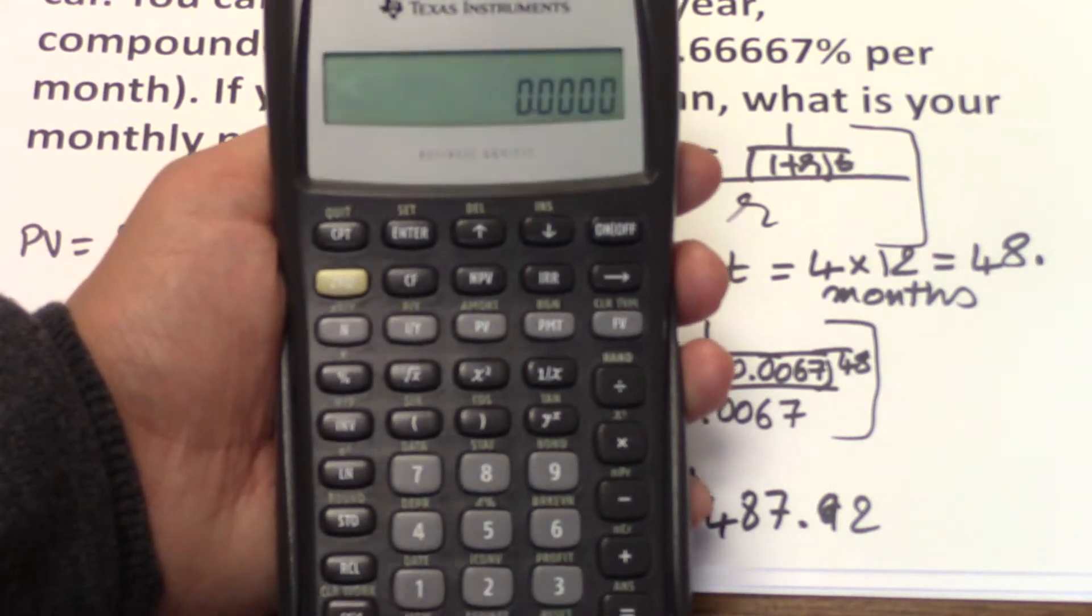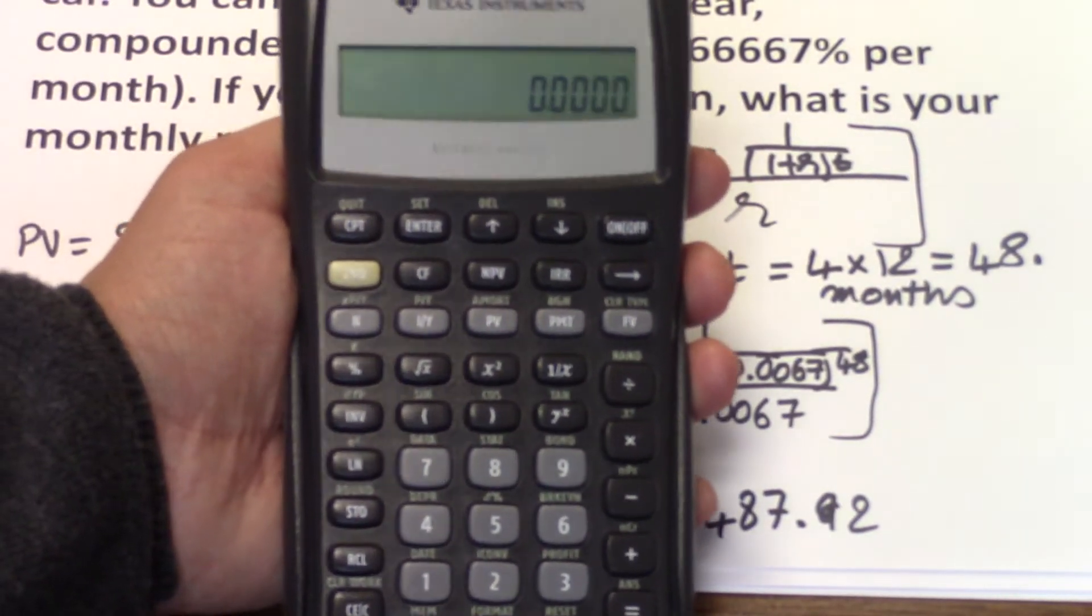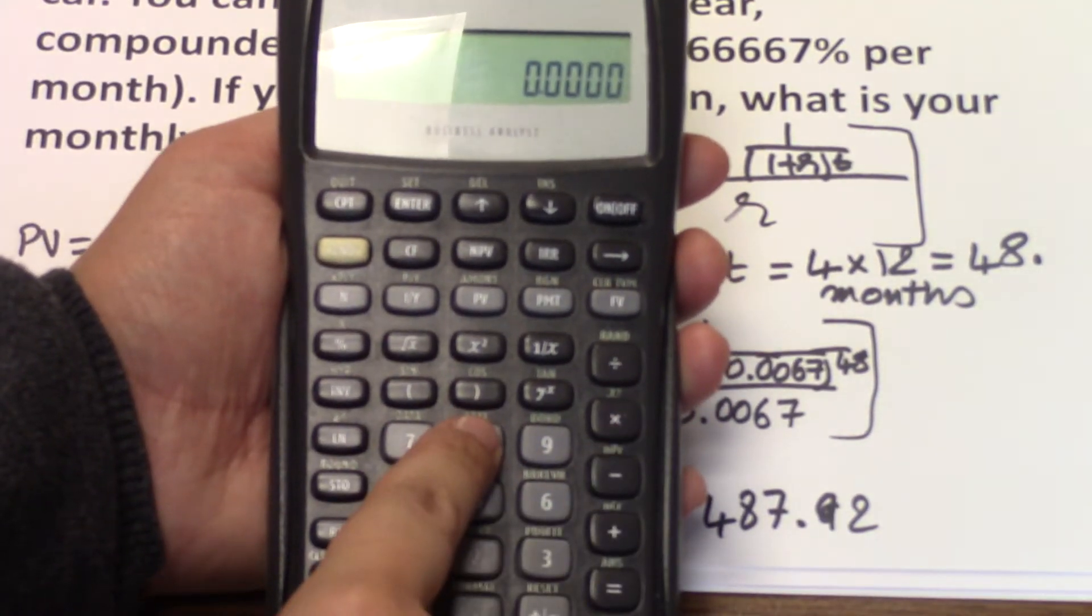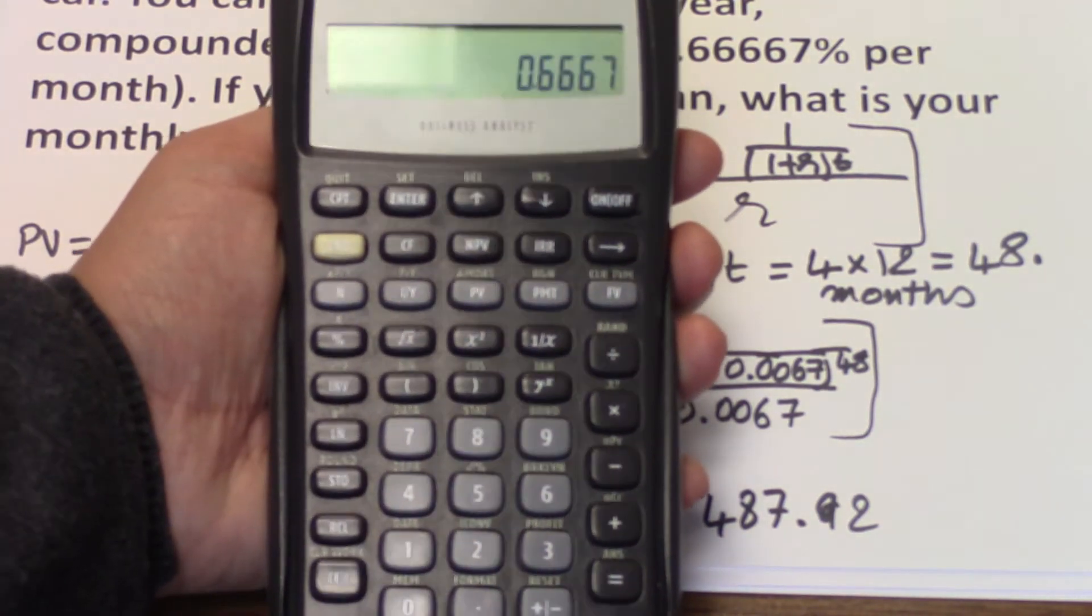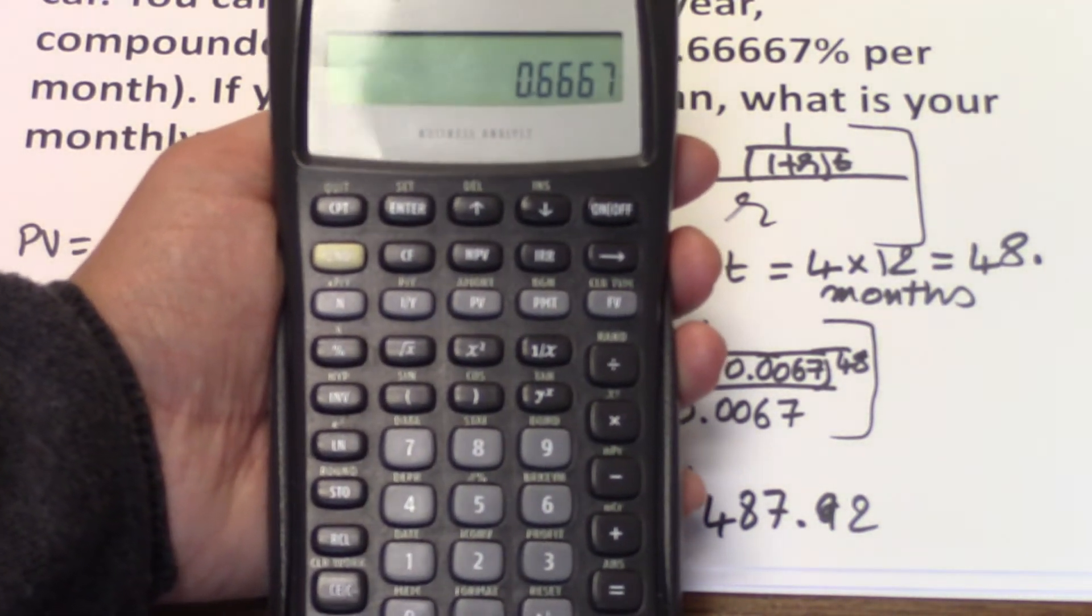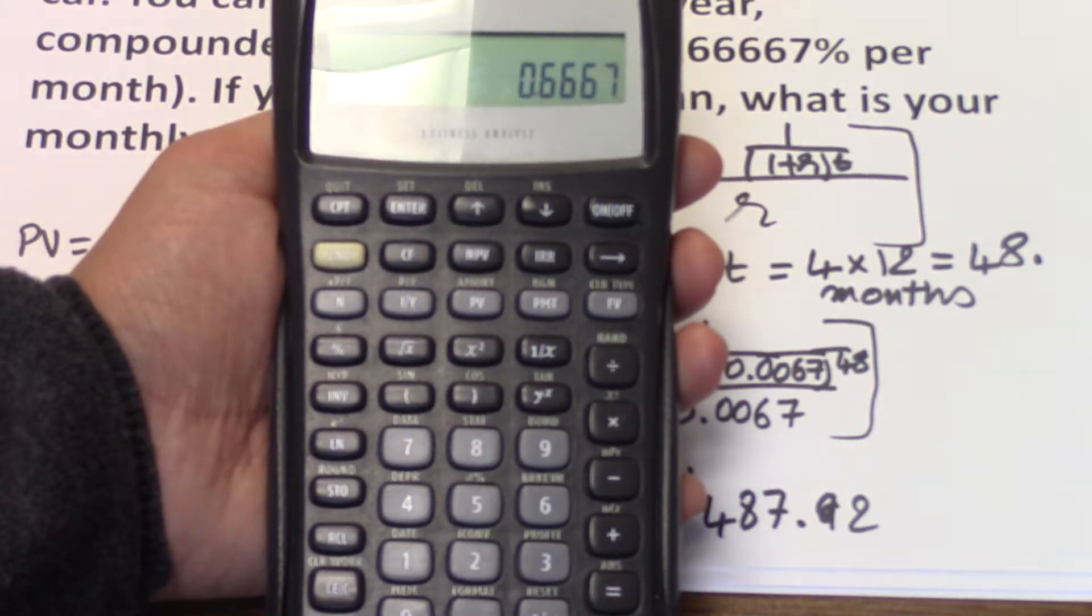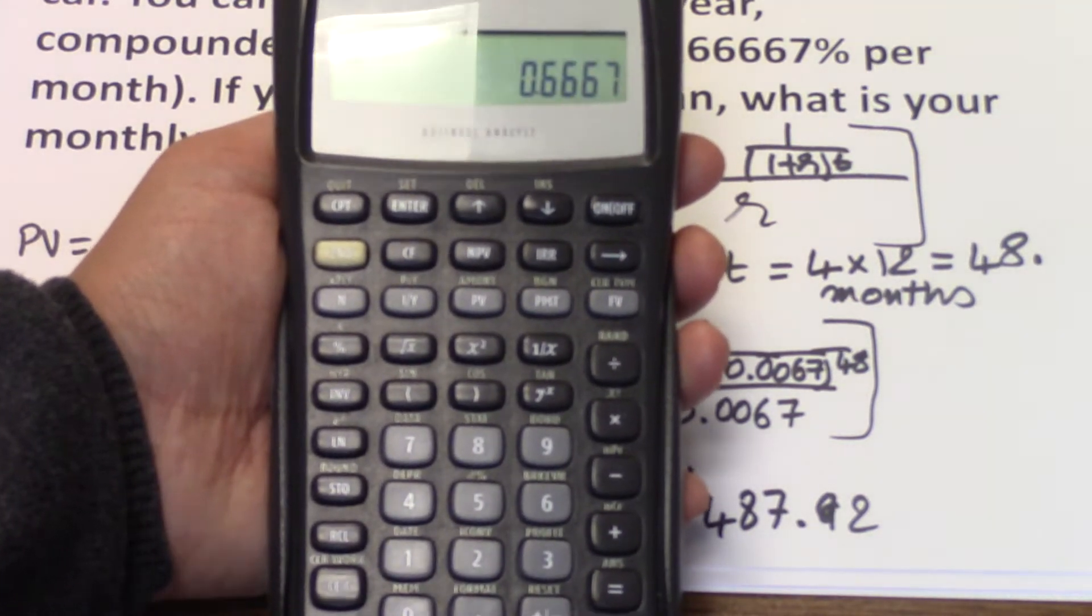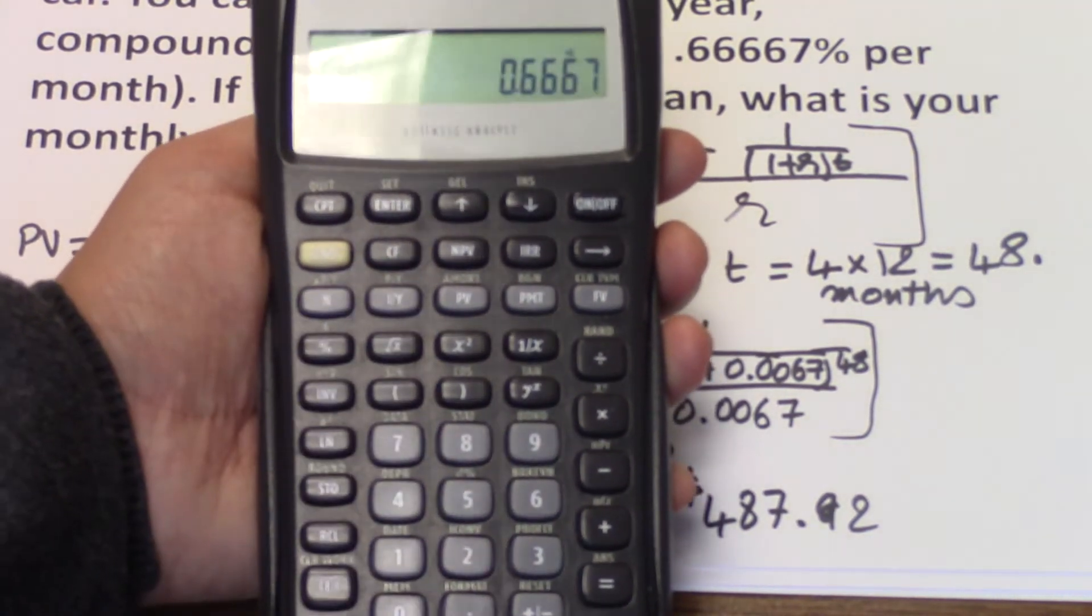To be more accurate, take that 8. For the percentage, take 8 divided by 12. We have that percentage, just like how it's given in the example. Then you input it as the I over Y.